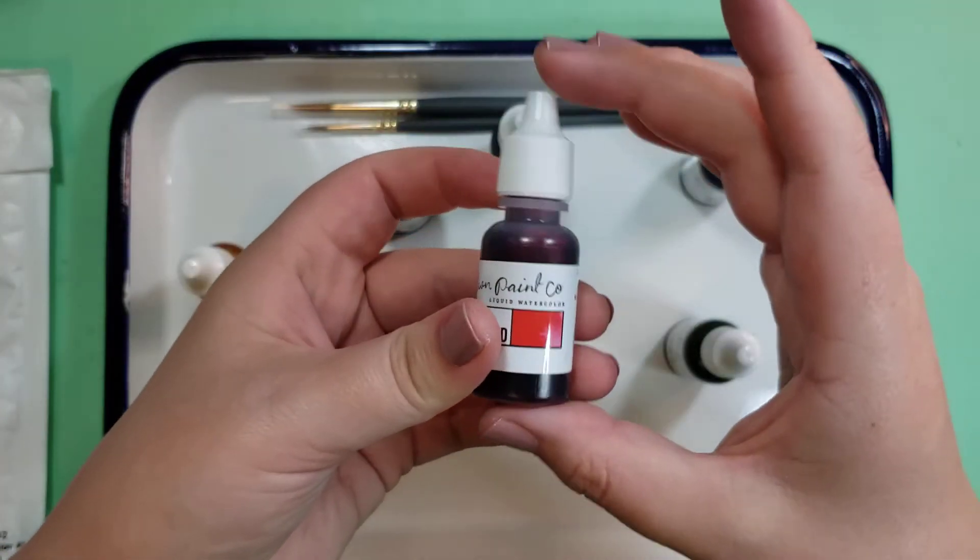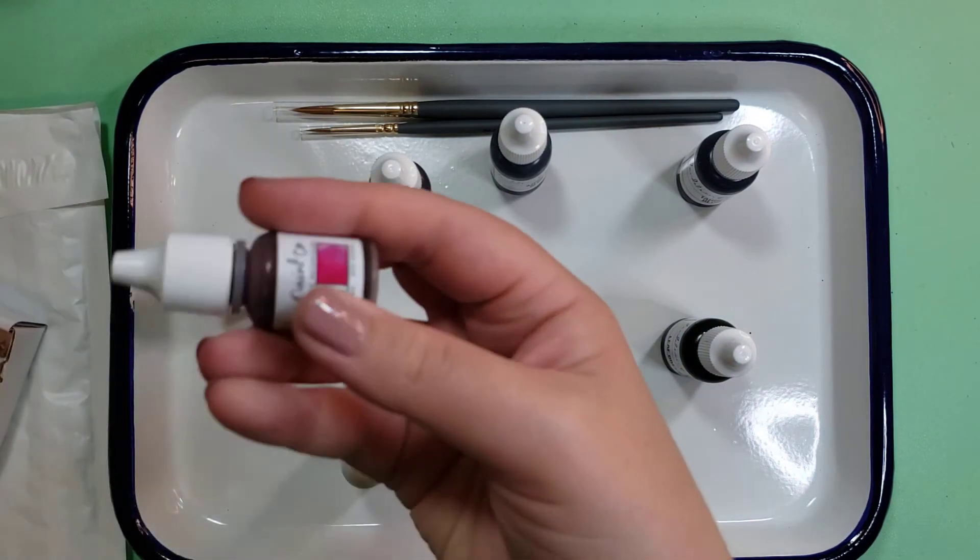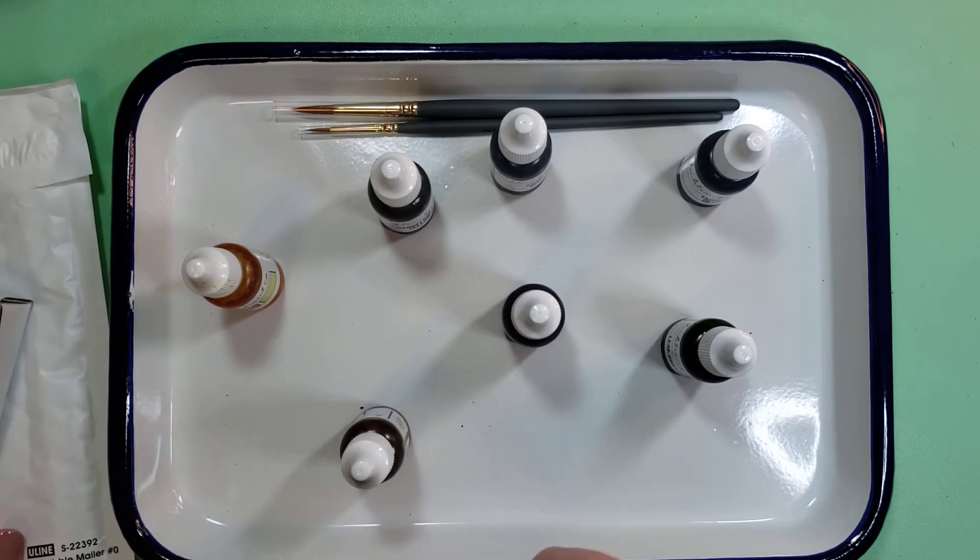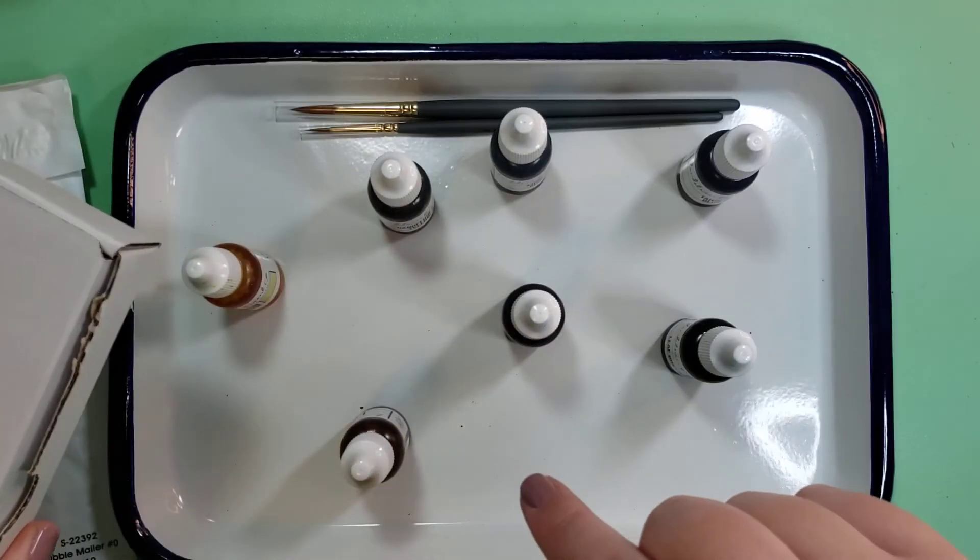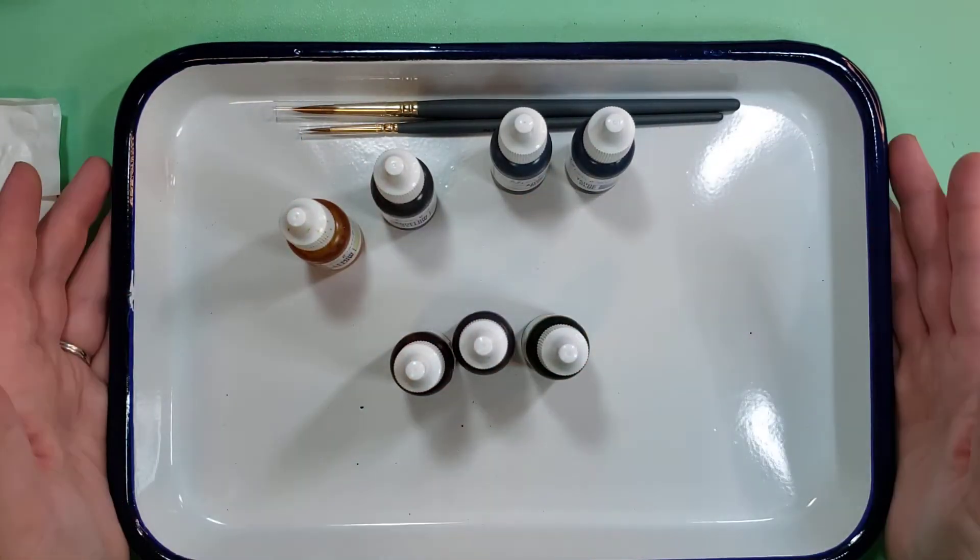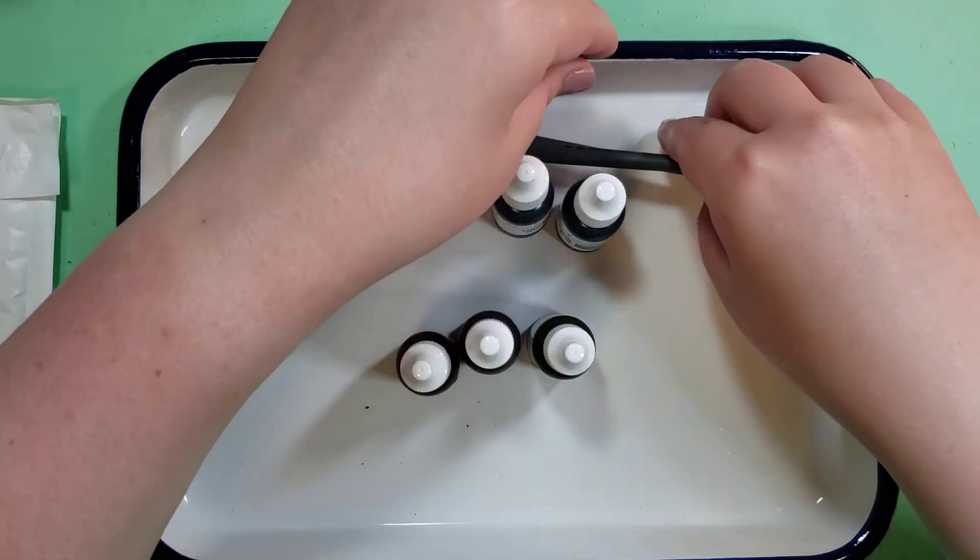And then there's a deep yellow. And then I just got regular red, basic red, because I also have the fuchsia from the kit. So I made sure not to duplicate any from the kit when I was looking through these colors. So I got seven of those, the butcher tray, and then the two paint brushes from the sale.